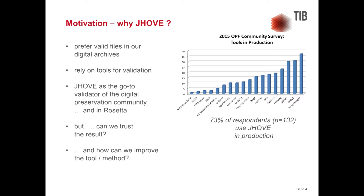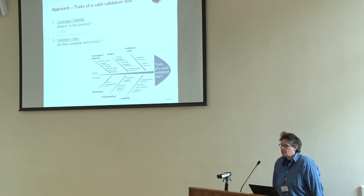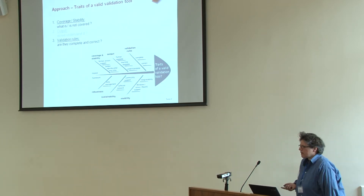As a side note, ImageMagick actually surpasses JOV in production use. JOV is also integrated into Rosetta. Like all other digital preservation systems, JOV wraps different modules for different file formats — one tool that supports a variety of formats. But the question is: can we actually trust the results? Can we improve the tool or method to check whether we can trust the results, or are there even tools or methods available?